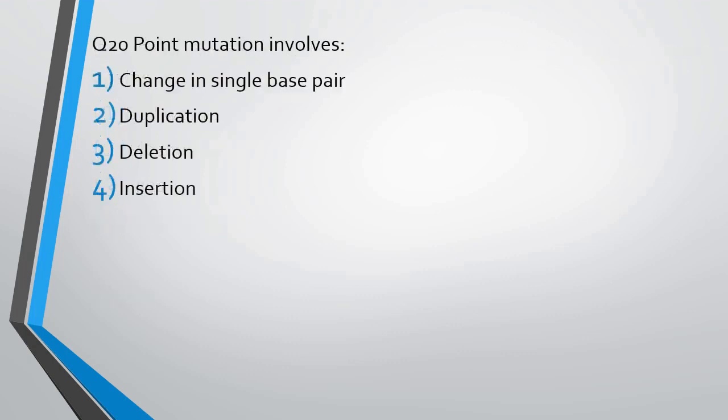Question number 20. Point mutation involves: (A) changes in a single base pair, (B) duplication, or (C) deletion or insertion. The correct answer is option A — change in a single base pair. The name itself reveals it: point mutation means there is a mutation at a single point.